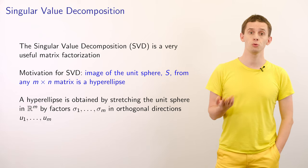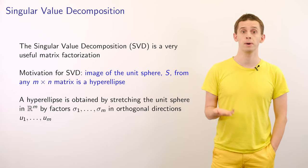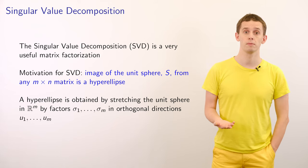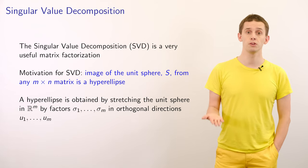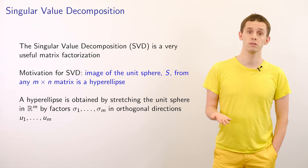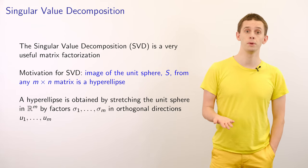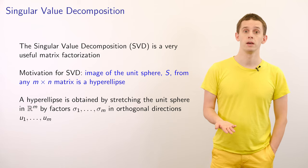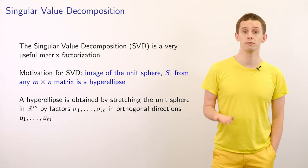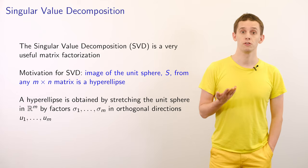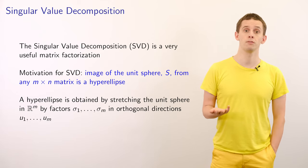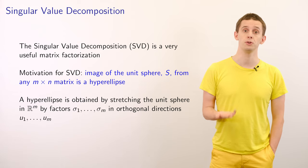Suppose we have a matrix A of size m by n, and we think of A as a linear transformation of space. Now let's look at the unit sphere S. If we apply A to S, then its image will be a hyperellipse. A hyperellipse in m-dimensional space will be defined in terms of stretches sigma_1 up to sigma_m along a set of orthogonal vectors u_1 up to u_m.